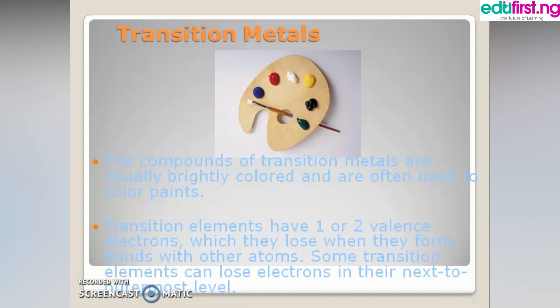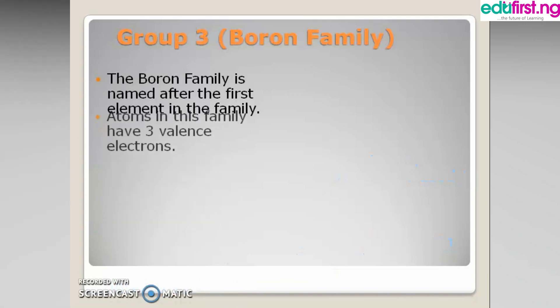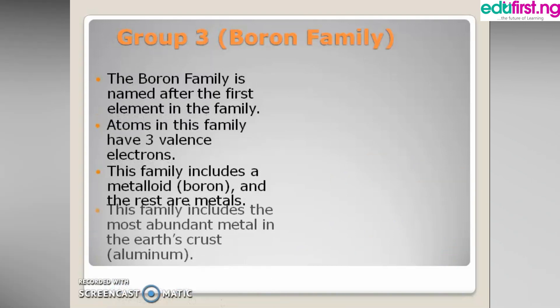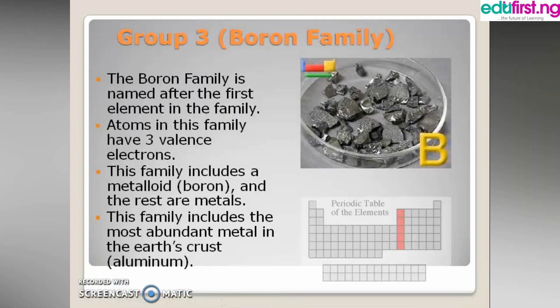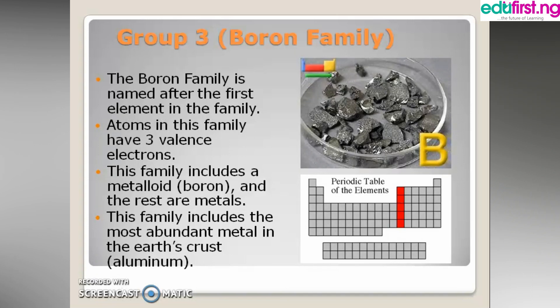Thirdly, we have group 3, which is the boron family. It was named after the first element in the group, which is boron. From the group name, group 3 elements have three valence electrons, meaning three electrons on their outer shell. The family includes boron and other metals, including the most abundant metal on earth, which is aluminum.